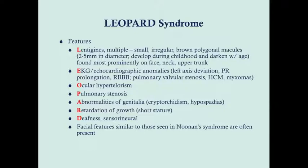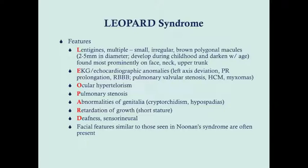Just like in Noonan's, you can also see hypertrophic cardiomyopathy. Another feature similar to Noonan's syndrome is ocular hypertelorism. You can also see pulmonary stenosis, abnormalities of genitalia, retardation of growth — which is just short stature — again seen in Noonan's syndrome. About a quarter of patients will have some level of sensorineural deafness. And the facial features are similar to those seen in Noonan's syndrome.